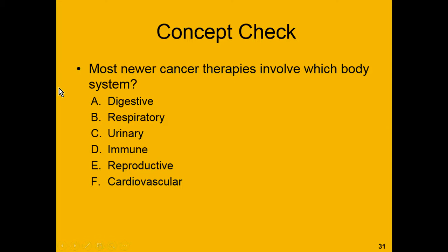Concept check: if we look at these new cancer therapies, which body system involves most of those treatments? Is it the digestive, the respiratory, the urinary, the immune system, the reproductive system, or the cardiovascular system? Go ahead and pause the video and get me an answer.